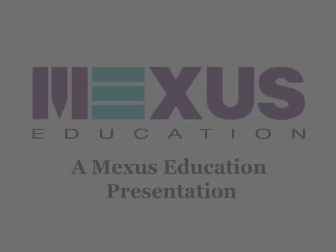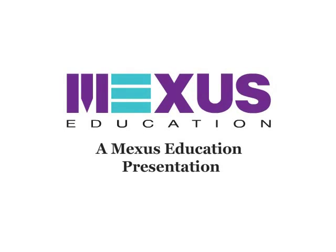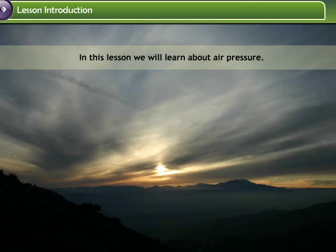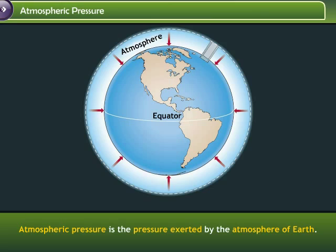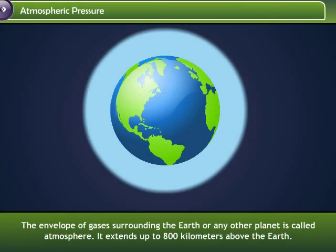Atmospheric Pressure. In this lesson, we will learn about air pressure. Atmospheric pressure is the pressure exerted by the atmosphere of Earth. The envelope of gases surrounding the Earth or any other planet is called the atmosphere. It extends up to 800 kilometers above the Earth.